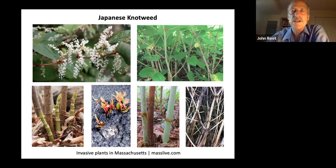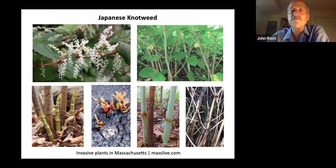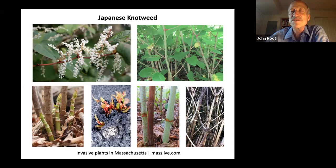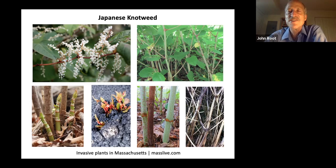Japanese knotweed is one of the worst. It is possible to dig out the roots, but don't expect that to solve the problem because even a small piece of root left behind will set up a new plant. However, if you keep harvesting or cutting those shoots back regularly — every three weeks or so throughout the growing season — and do that for maybe two, three, or four years, those roots will eventually give up. Incidentally, those shoots are edible: if you like anything with the flavor of rhubarb, Japanese knotweed shoots are a substitute for rhubarb.